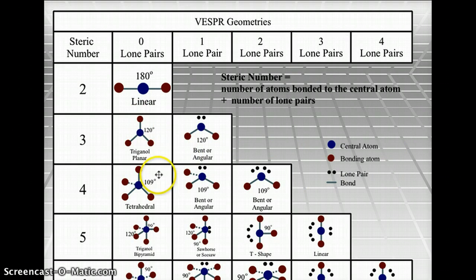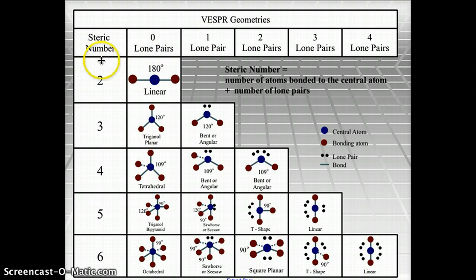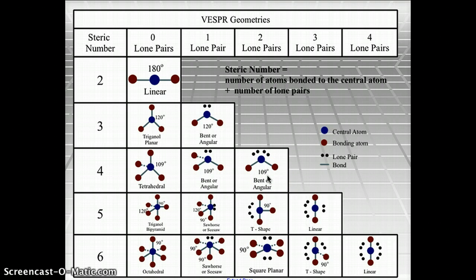There's a chart posted on your Blackboard that you can download as a PDF. It helps determine geometric shapes based on steric numbers and lone pairs. For example, a steric number of two with zero lone pairs gives a linear molecule at 180 degrees. A steric number of three with one lone pair gives a bent molecule at 120 degrees. A steric number of four with two lone pairs gives a bent molecule at approximately 109 degrees.